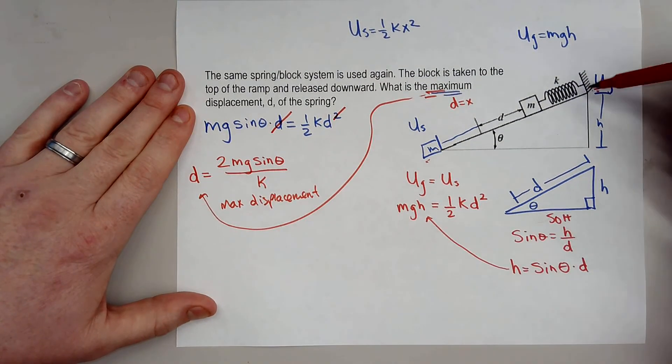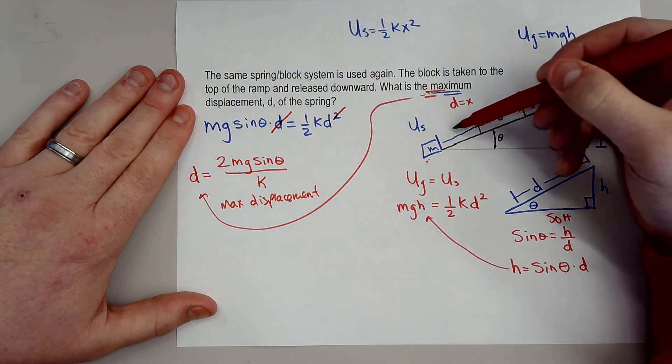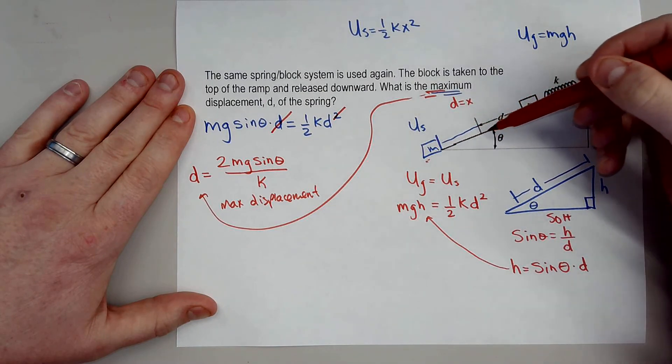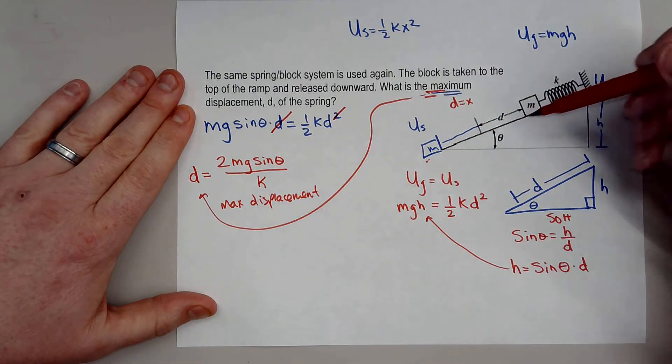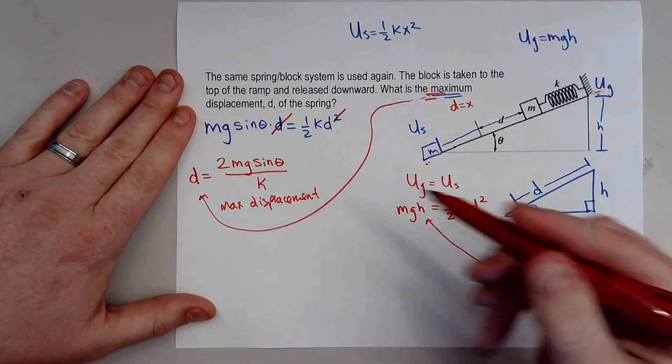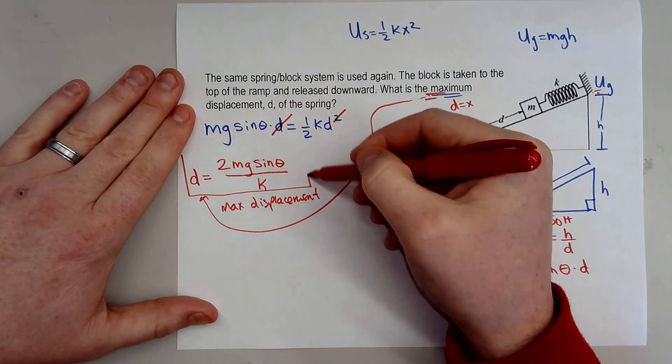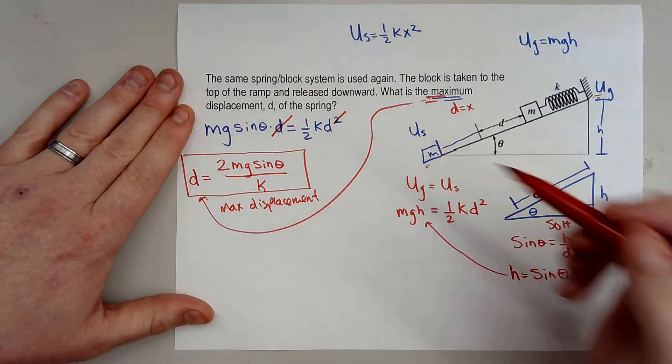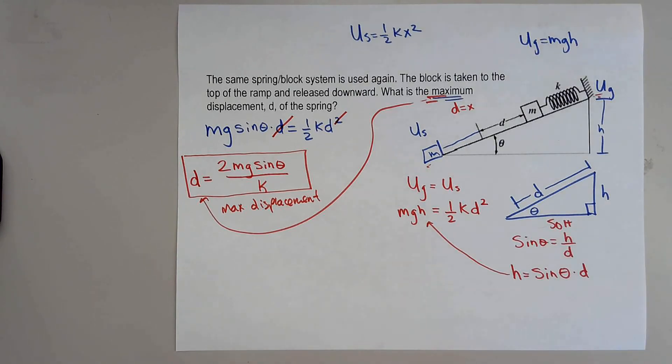So this will be how far this block would travel down the ramp with the spring right before having to come back past equilibrium and back to the top. So I hope this tutorial helped and if so give me a thumbs up and a like and subscribe for more physics content and thank you for watching. Have a great day.